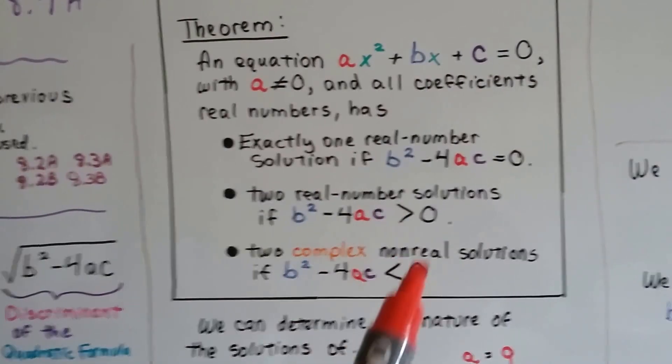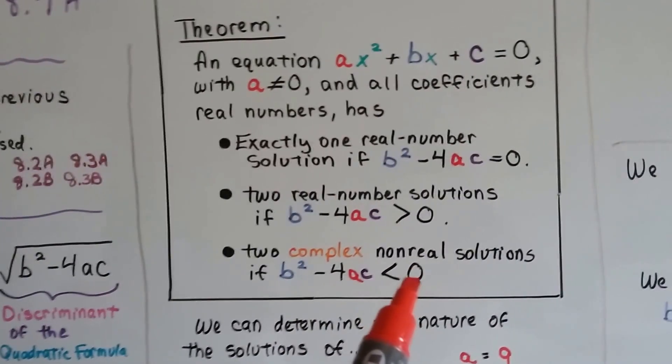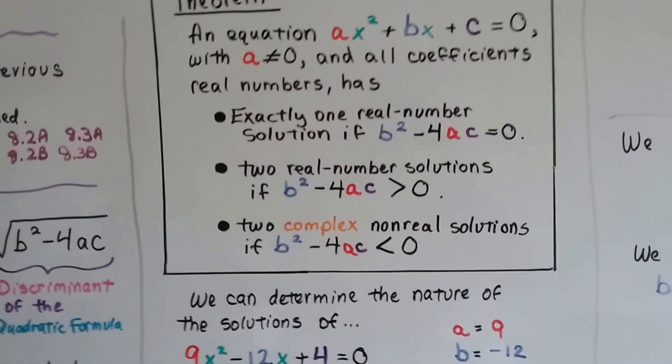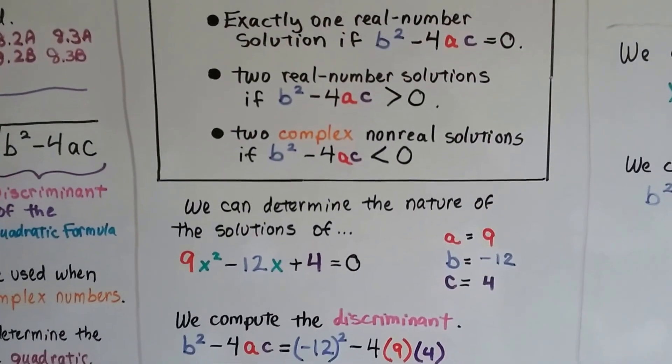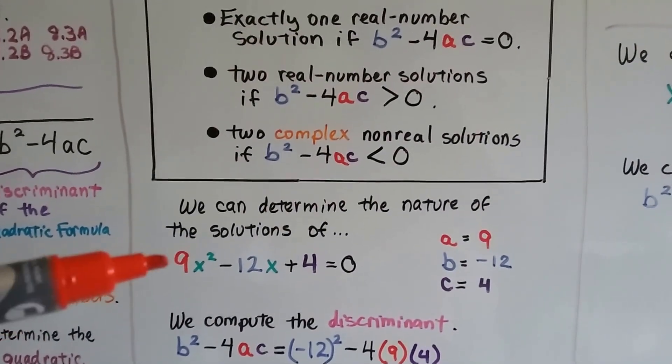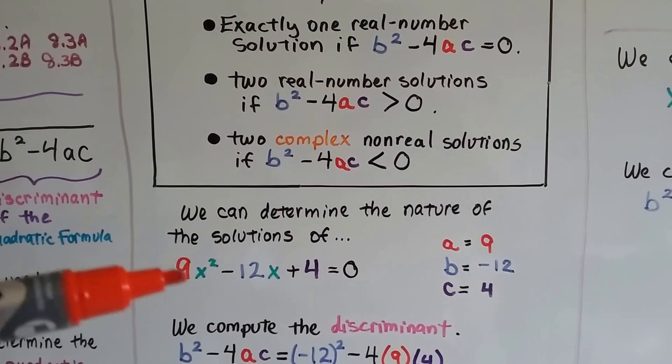And two complex non-real solutions if it's less than zero. So you know this one means if it's positive and that one's if it's negative, because if it's less than zero, it's negative, right?